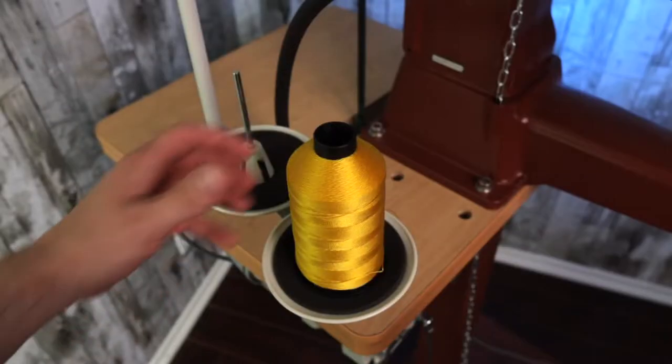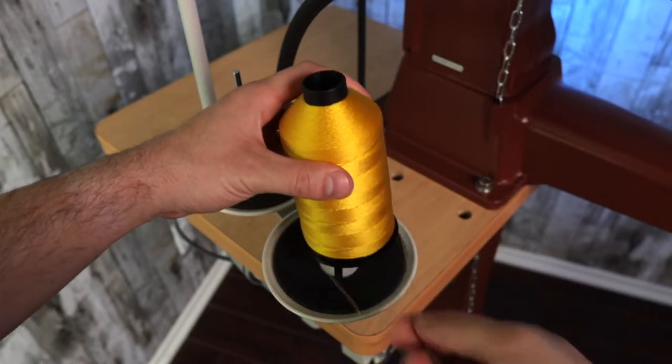What's up everybody, episode number 21. Today we are taking a look at how to properly thread the Cobra Class 4 sewing machine from the thread stand all the way to the needle, and then how to properly thread and load a bobbin. Let's just take a look. First things first, make sure there is no thread being hindered or blocked from coming off the thread cone.